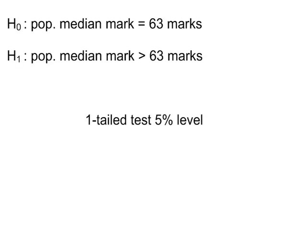H0, the population median mark is equal to 63. H1, the population median mark is greater than 63. This will be a one-tailed test and we're using a 5% significance level. Make sure when writing H0 and H1, the word population is used. If you just write down median mark equals 63, that's wrong. It must say population median.